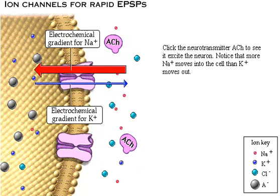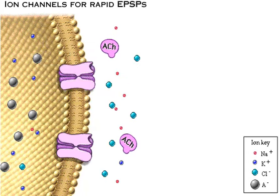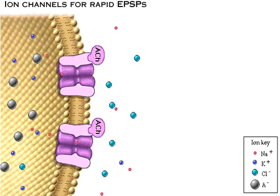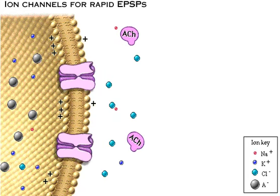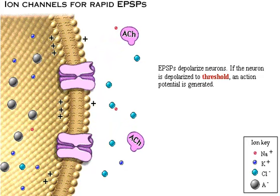Click the neurotransmitter acetylcholine to see it excite the neuron. Notice that more sodium moves into the cell than potassium moves out. Excitatory post-synaptic potentials depolarize neurons. If the neuron is depolarized to threshold, an action potential is generated.